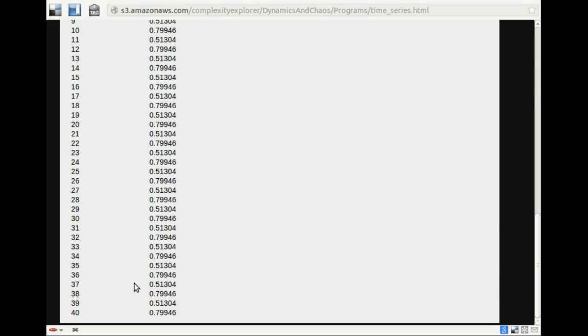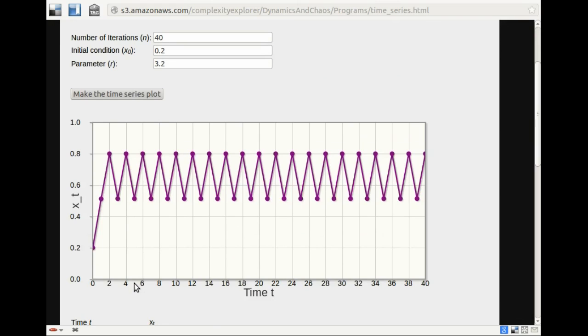And indeed, it's going between .799, about .8, and .51. So for this R value, when R is 3.2, we see periodic behavior with period 2.